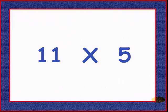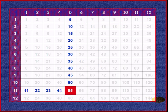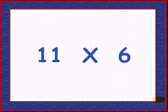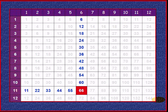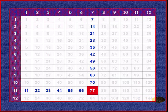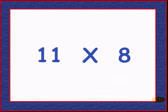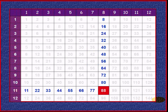11 times 5 is 55. 11 times 6 gives 66. 11 times 7 is 77. 11 times 8 equals 88. Just add 11 to 77.